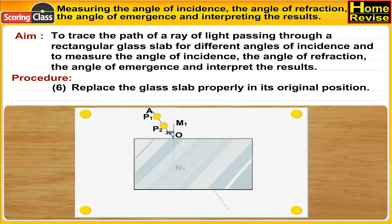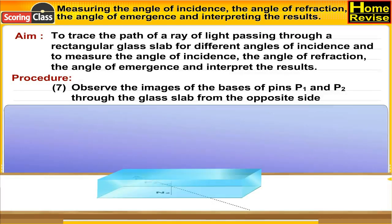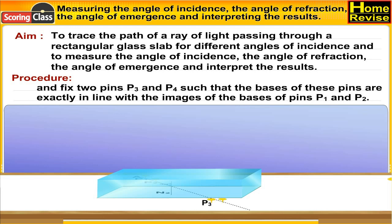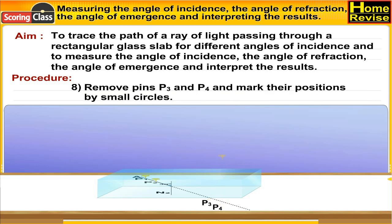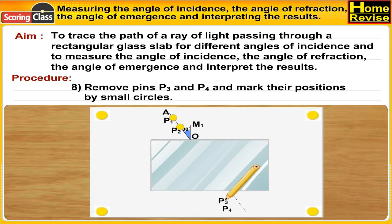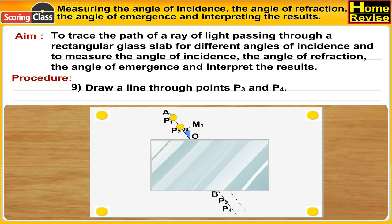Place the glass slab properly in its original position. Observe the images of the bases of pins P1 and P2 through the glass slab from the opposite side, and fix two pins P3 and P4 such that the bases of these pins are exactly in line with the images of pins P1 and P2. Remove pins P3 and P4 and mark their positions by small circles. Draw a line through points P3 and P4.